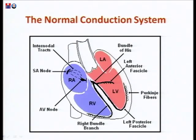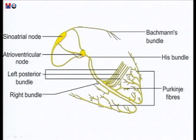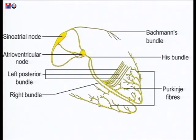Back to basics — the normal conduction system: SA node, hypothetical atrial bundles, AV node, then the right bundle and left bundle. The left bundle has two fascicles — posterior and anterior. The posterior fascicle is more fanned out, has more fibers, and travels posteriorly into the LV wall. Because the left bundle has two fascicles covering a larger area, left bundle branch block itself means there is more associated damage in the heart.